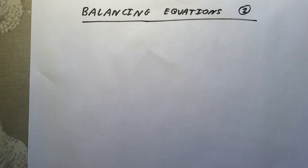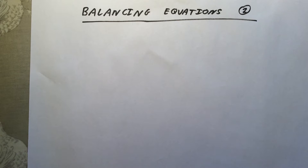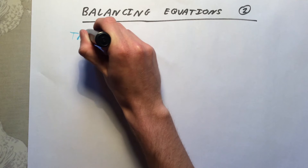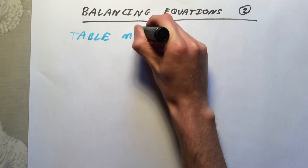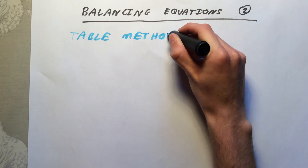In the last video we looked at the first method we can use to balance symbol equations: the bubble method. That is a really nice visual way of seeing what atoms you've got in your equation, being able to count them up nice and easily and then balance your equation. There are other methods of doing it. You don't have to use one method over another - you'll never be asked for that. Some people prefer the bubble method, some people prefer other methods. In this video we're going to look at a method called the table method, which unsurprisingly involves us drawing a table so we can count up our atoms nice and simply.